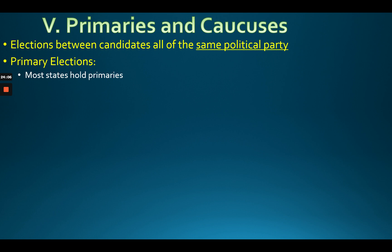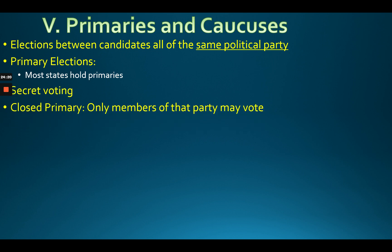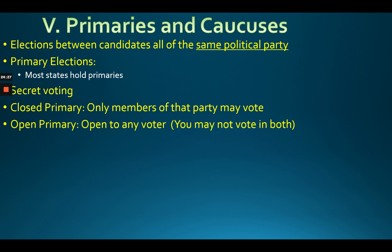By summer, they know who won the primary and who's actually going to run — for president, governor, Senate, etc. Primaries are secret voting. There's a difference between an open primary and a closed primary. An open primary is when you can show up on the day and vote for whatever party you want. A closed primary requires you to be registered with that party.